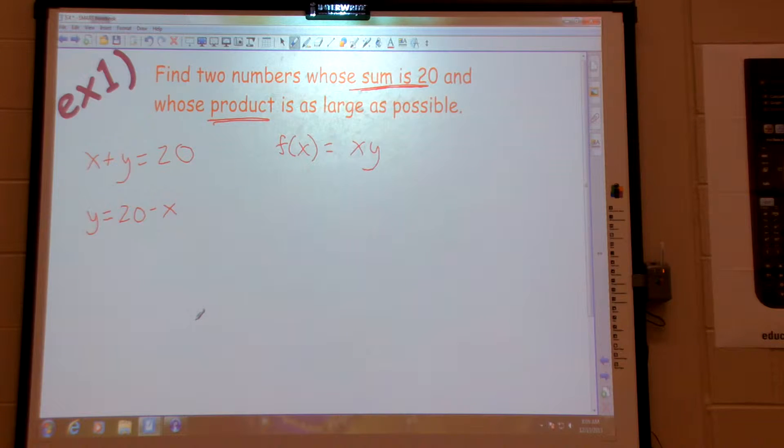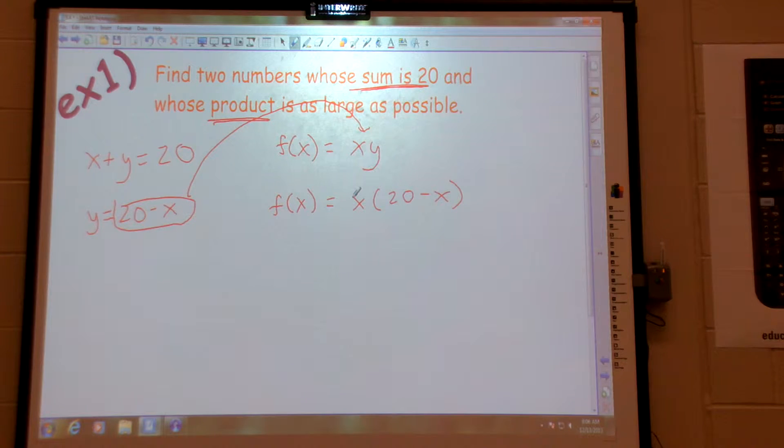With me there? So I'm going to plug that in for y. So f of x is x times 20 minus x. And that right there is usually the hardest part.